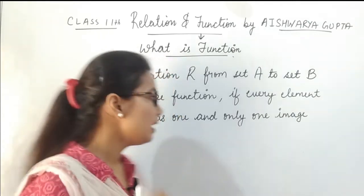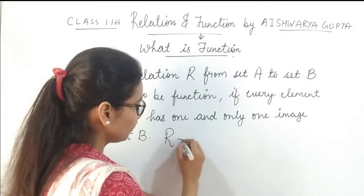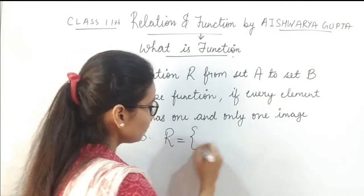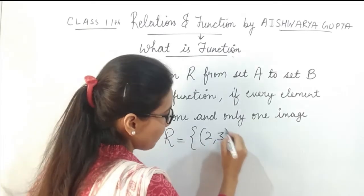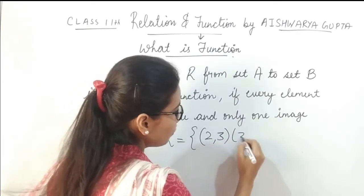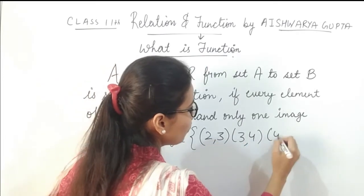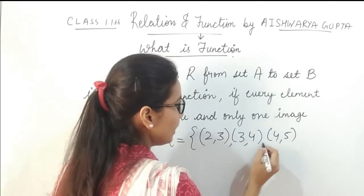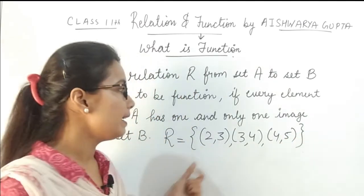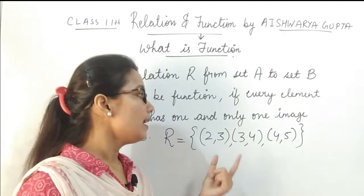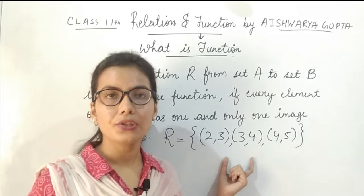For example, if we have a relation {(2,3), (3,4), (4,5)}, then if we ask whether this relation is a function — yes it is.